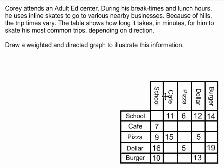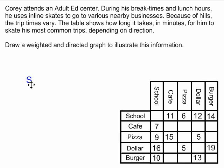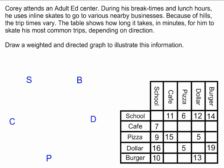The first thing you have to do is examine the situation and realize that you have five locations that are important here. Those five locations have to show as vertices on your graph. I'm starting with the school, putting a vertex named S. Then I need vertices for the cafe, the pizza place, the dollar store, and the burger place. I'm putting a B for the burger place, a D for the dollar store, a P for the pizza place, and a C for the cafe. Now all my vertices are represented.